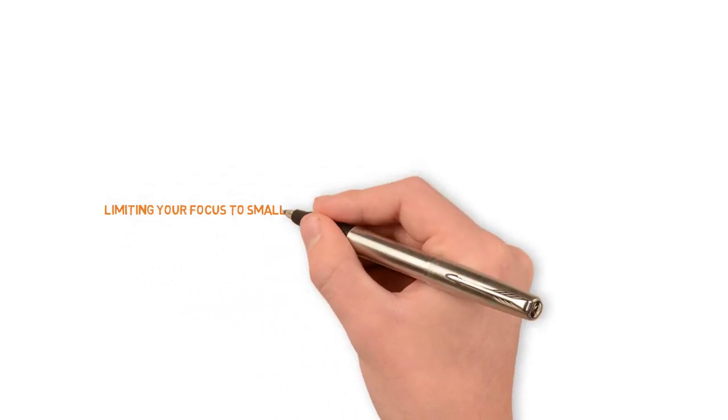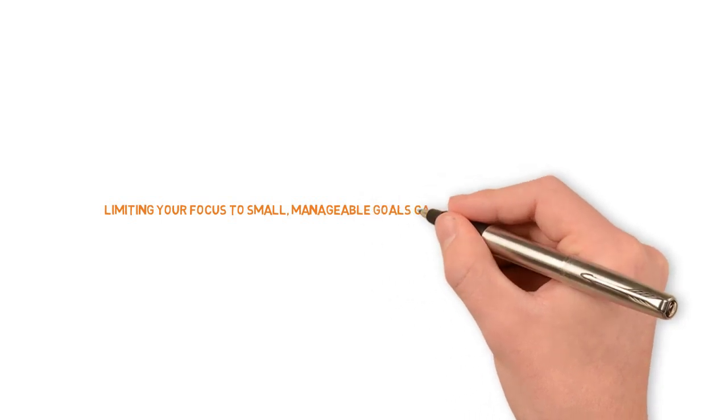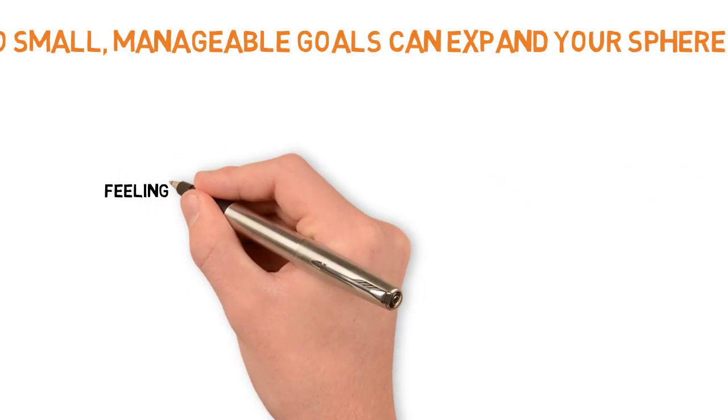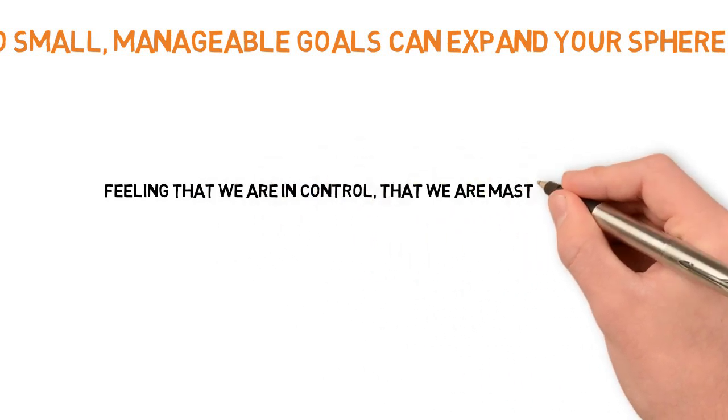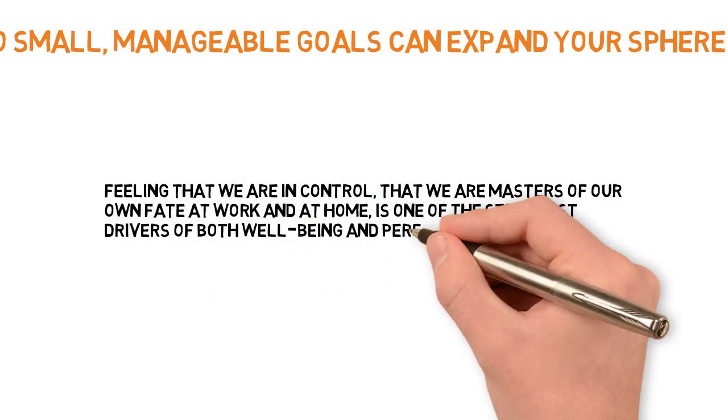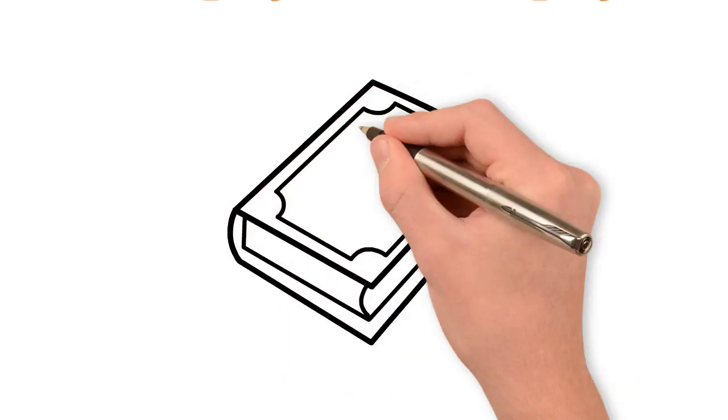The fifth lesson from this book is that limiting your focus to small, manageable goals can expand your sphere of power. Feeling that we are in control, that we are masters of our fate at work and at home, is one of the strongest drivers of both well-being and performance.